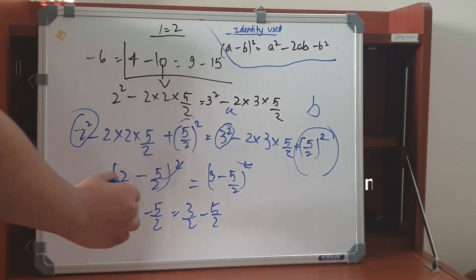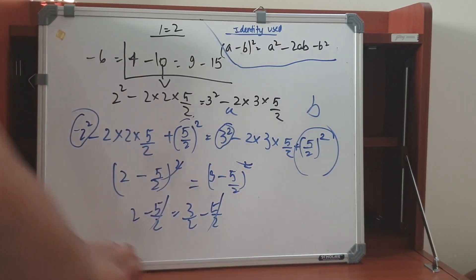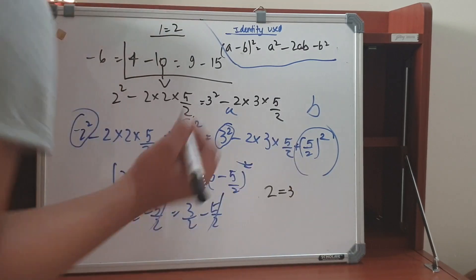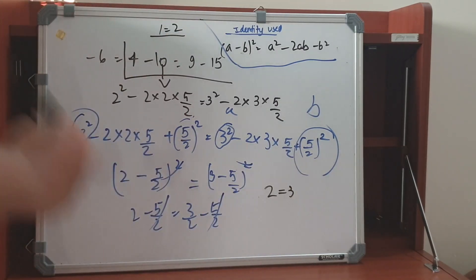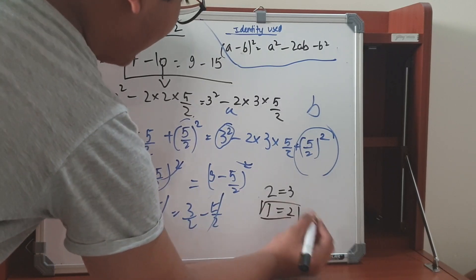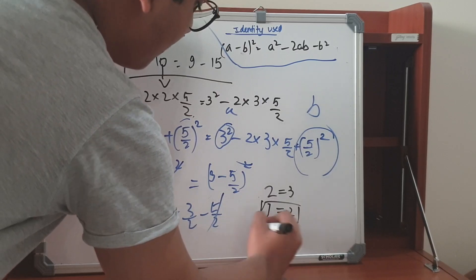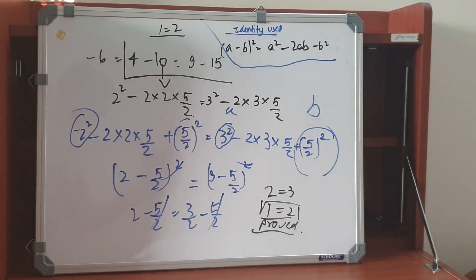We cancel minus 5/2 from both sides, so the final outcome is 2 is equal to 3. If we subtract 1 from both sides we get 1 is equal to 2 — hence proved. Thank you friends for watching my video, please like, subscribe, and share my channel.